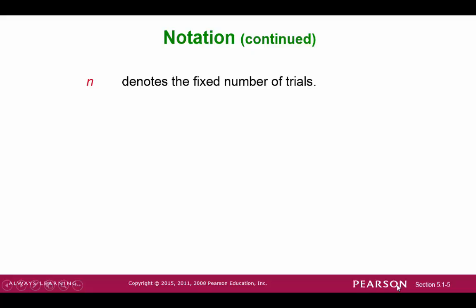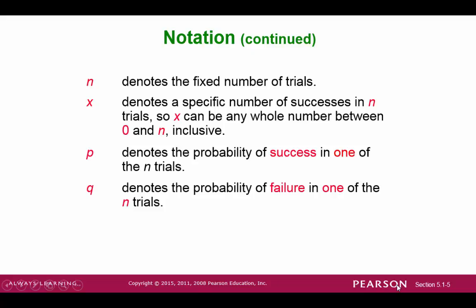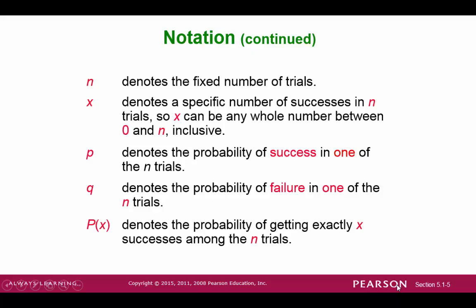To summarize this notation, we have n to denote the number of fixed trials. x is the random variable that counts the number of successes in n trials. p is the probability of success and q is the probability of failure. We will use P(x) as the probability of getting exactly x successes in n trials.